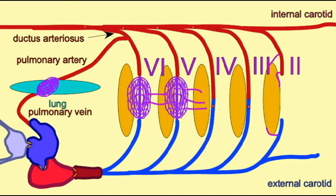There is a ductus arteriosus which connects this sixth arch to the dorsal aorta.